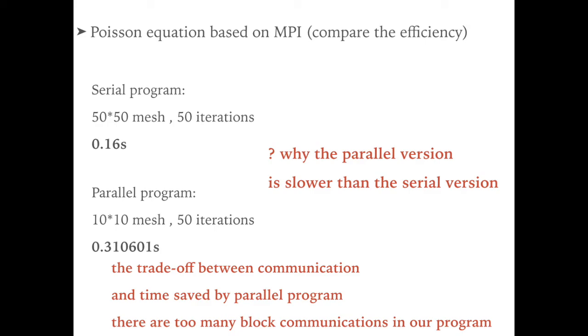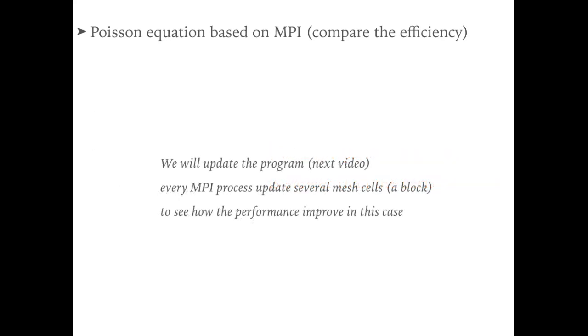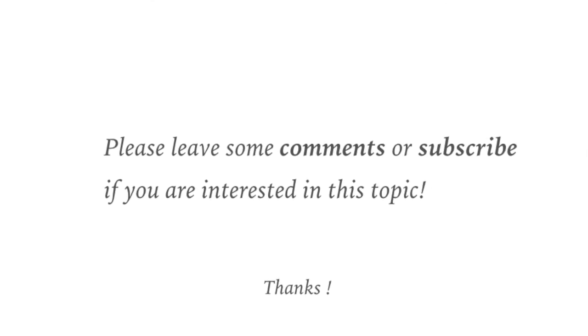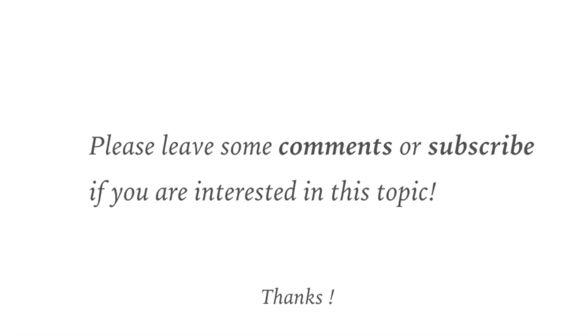So for the next video, we will update our parallel program. In that case, every MPI process will update several mesh cells. We call them a data block, and in that example, we could see how the performance improves by updating the strategy of parallel levels. That's all for this video. Thanks for watching. See you next time.